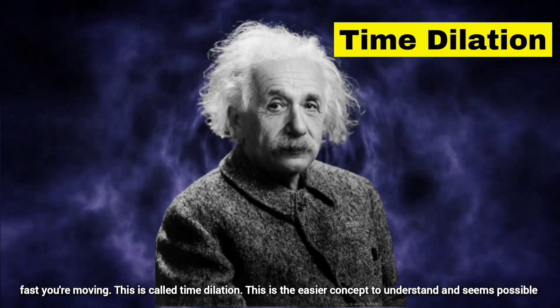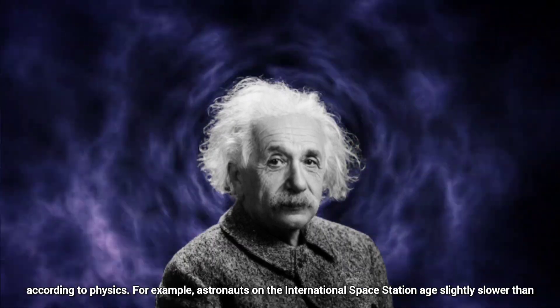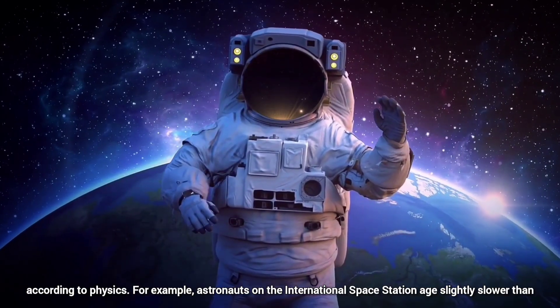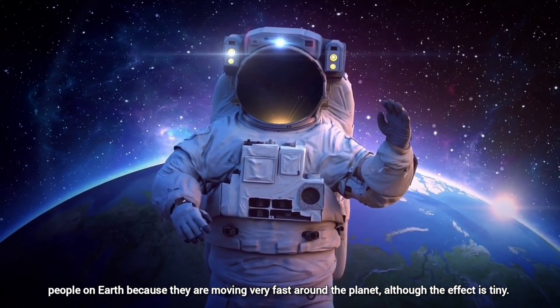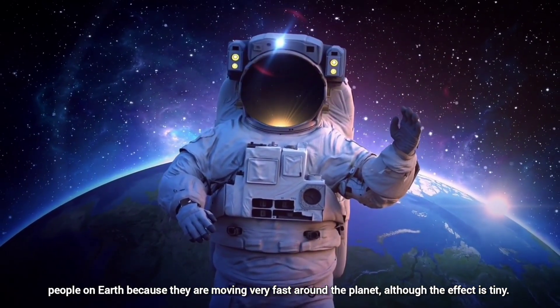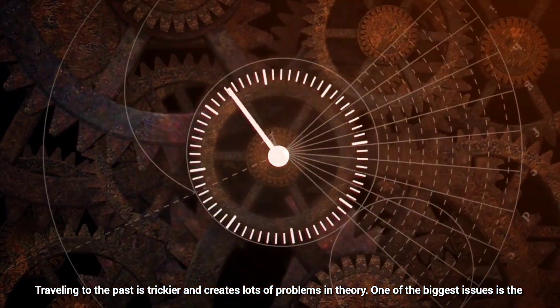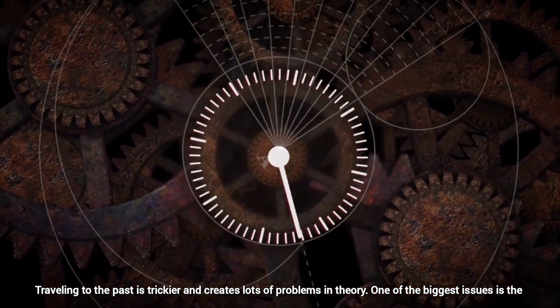This is the easier concept to understand and seems possible according to physics. For example, astronauts on the International Space Station age slightly slower than people on Earth because they are moving very fast around the planet, although the effect is tiny. Traveling to the past is trickier and creates lots of problems in theory.